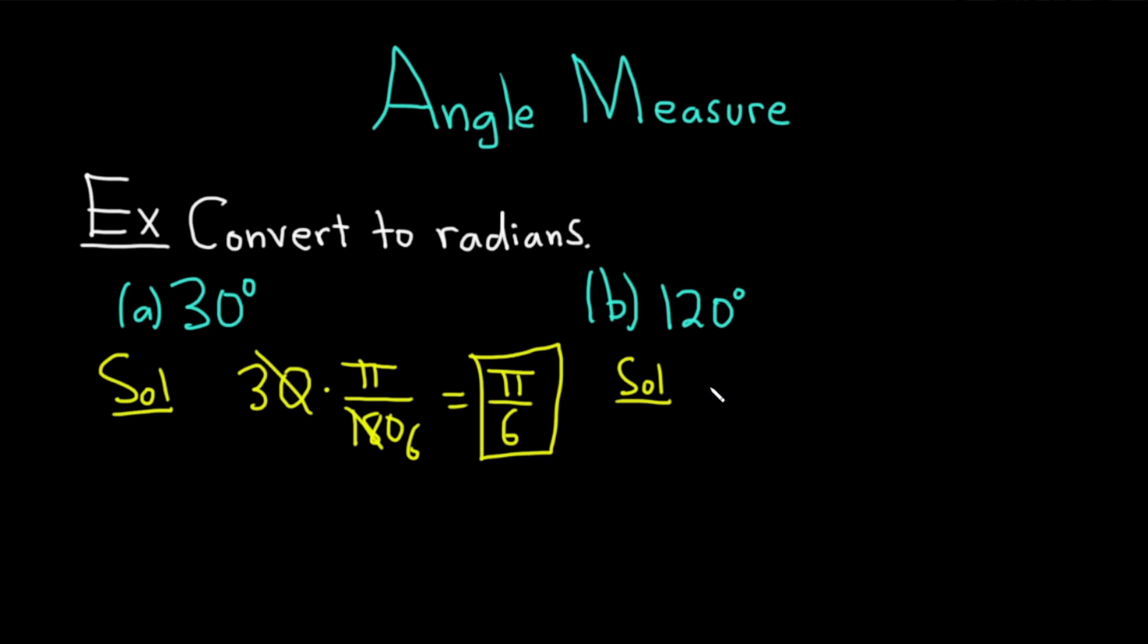Same thing. You take the 120, and then you just always multiply it by pi over 180 in order to convert to radians every single time. This might be a little bit harder to do in your head, but if you think about it, 60 goes into 120 twice, and 60 goes into 180 three times. So, this ends up being 2 pi all over 3, and that would be your radian measure.